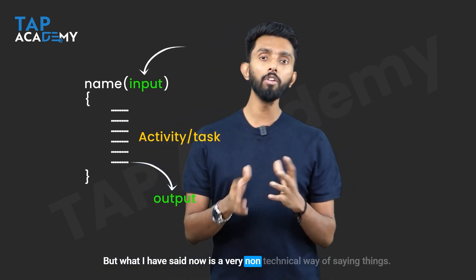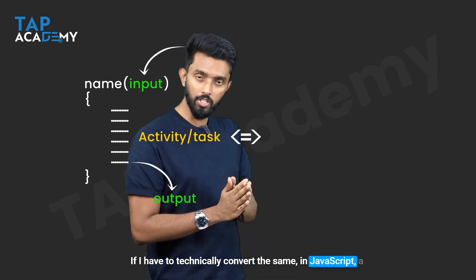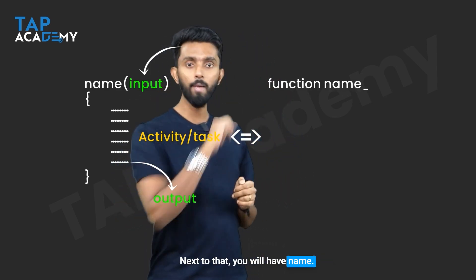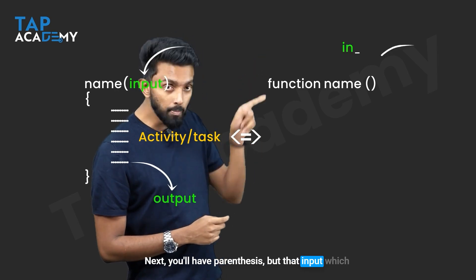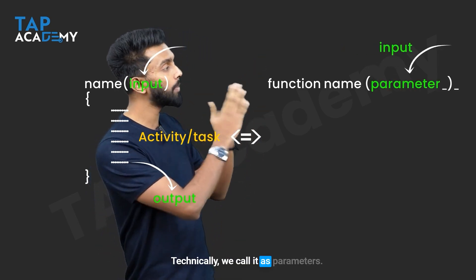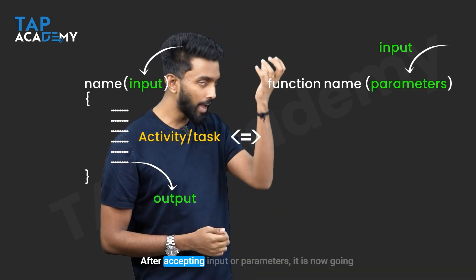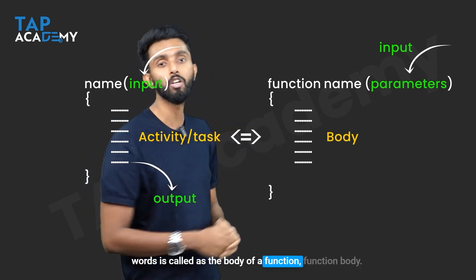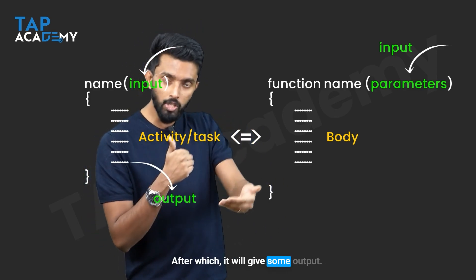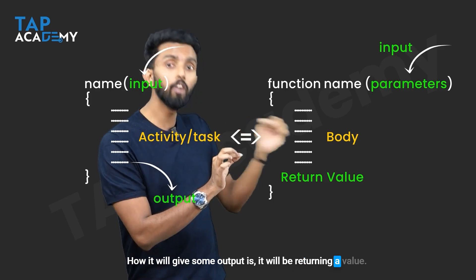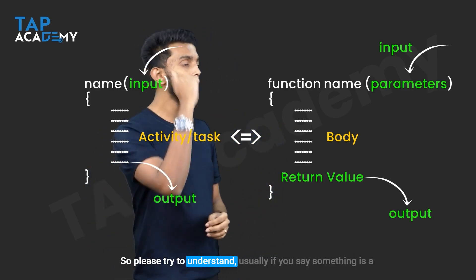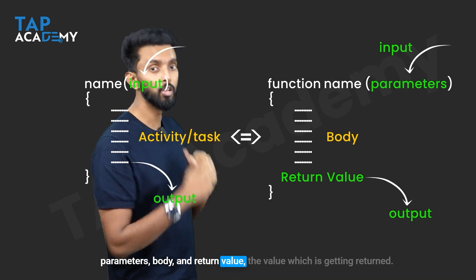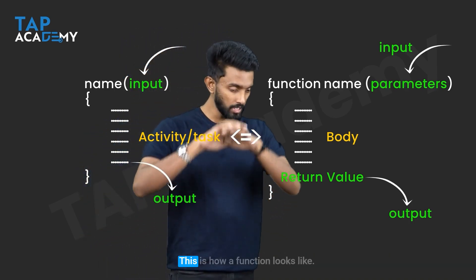What I said is a non-technical way. If I have to technically convert the same in JavaScript: a function will always begin with a keyword called 'function', followed by a name, then parentheses. That input it receives, we don't call it input in programming — we call it parameters. After accepting parameters, it performs some activity or task, which in technical terms is called the body of a function. After which, it will give some output by returning a value. So: keyword 'function', name, parameters, body, and return value. This is how a function looks like.